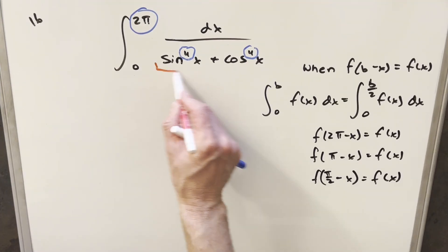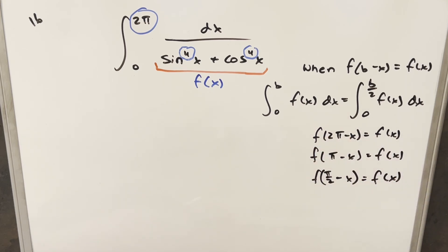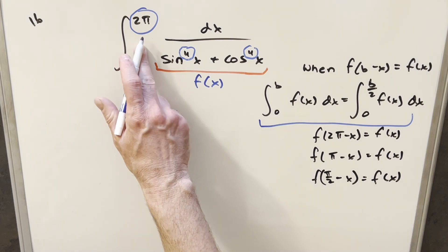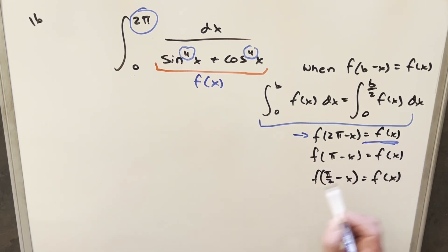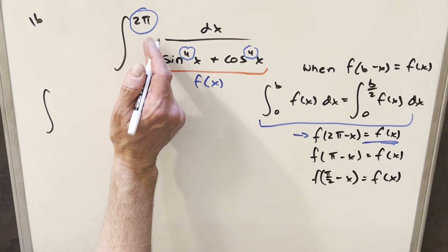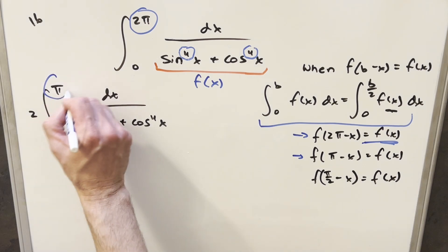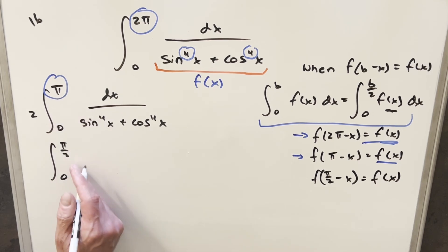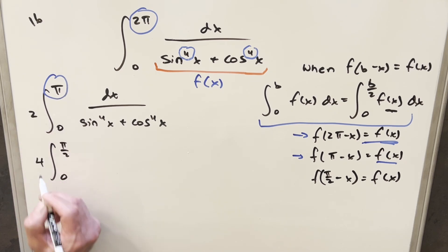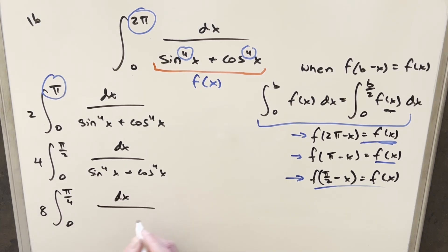Now finally we get back to our integral. We apply this principle repeatedly. Starting with b = 2π: f(2π − x) = f(x), so we cut the bounds to get 2 times the integral from 0 to π. Since f(π − x) = f(x), we cut again: 4 times the integral from 0 to π/2. Applying it once more with f(π/2 − x) = f(x): 8 times the integral from 0 to π/4.